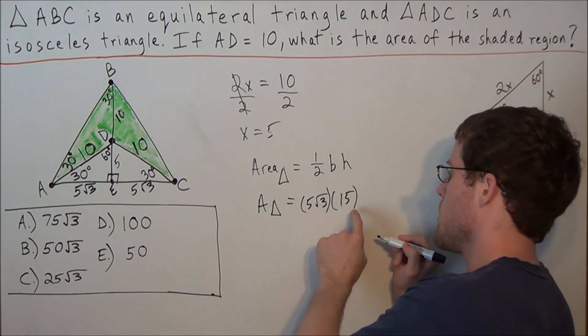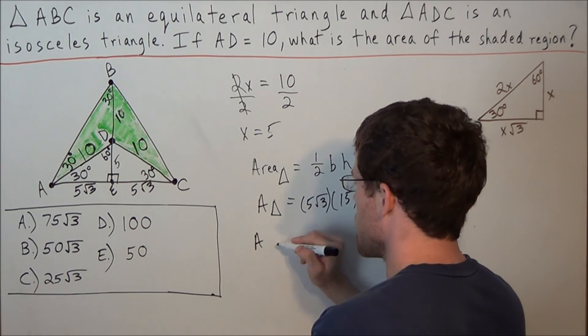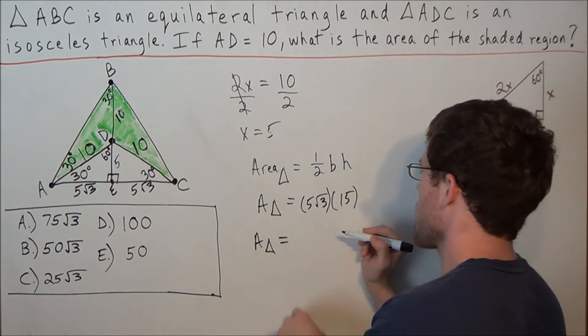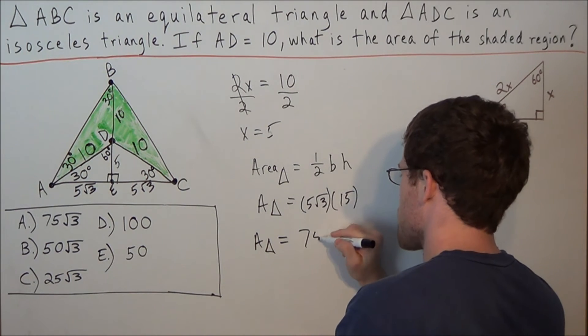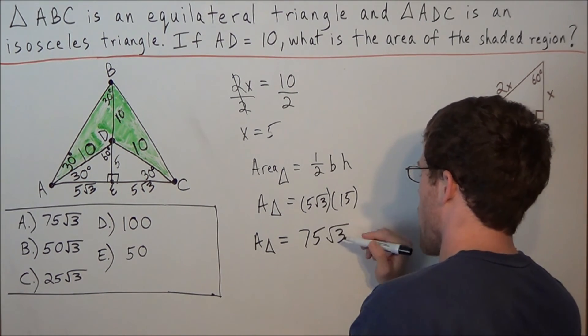So we have 5 radical 3 times 15. So the area of the big triangle, 5 times 15 is 75. So we have 75 radical 3.